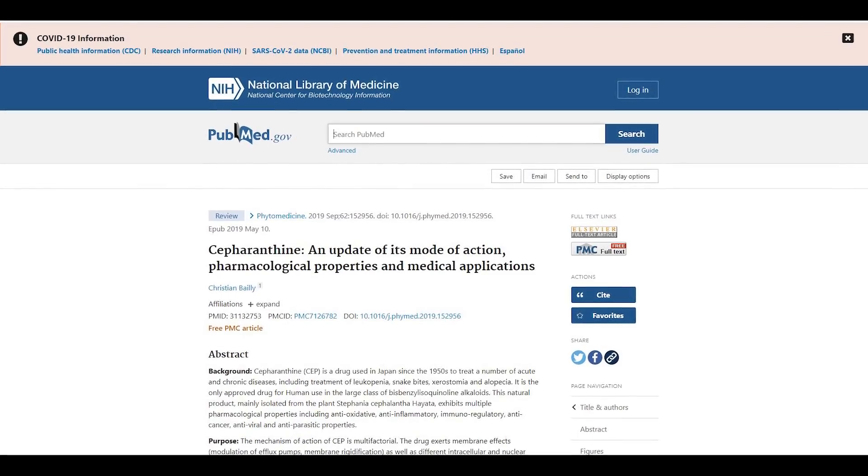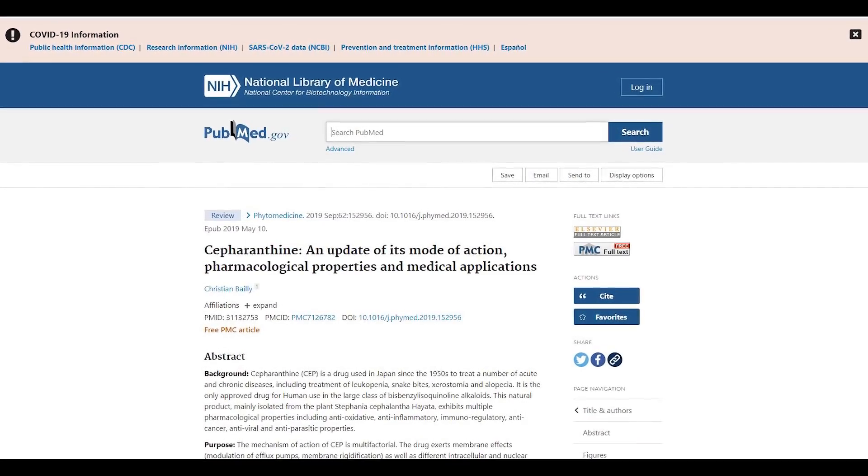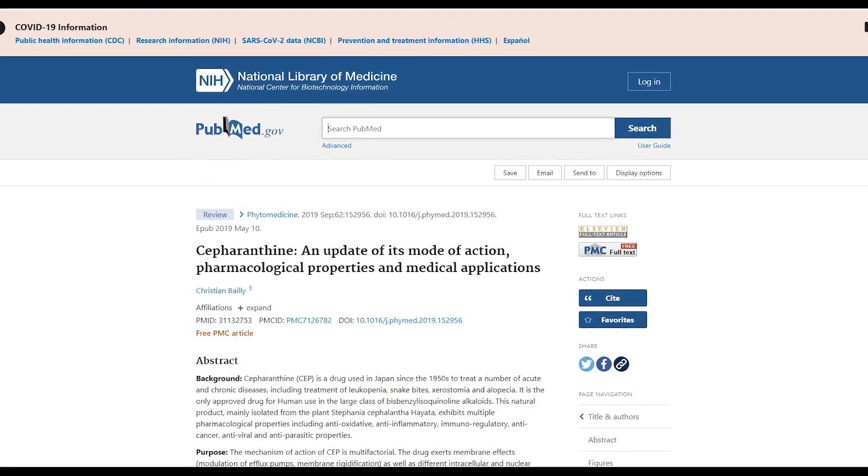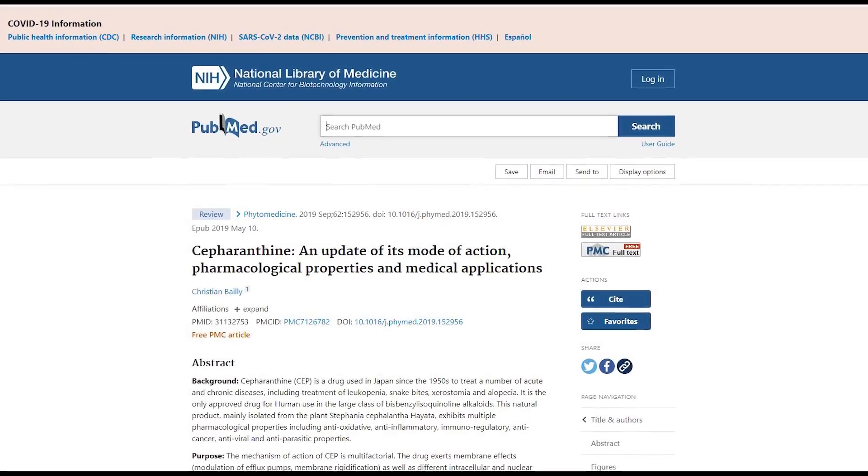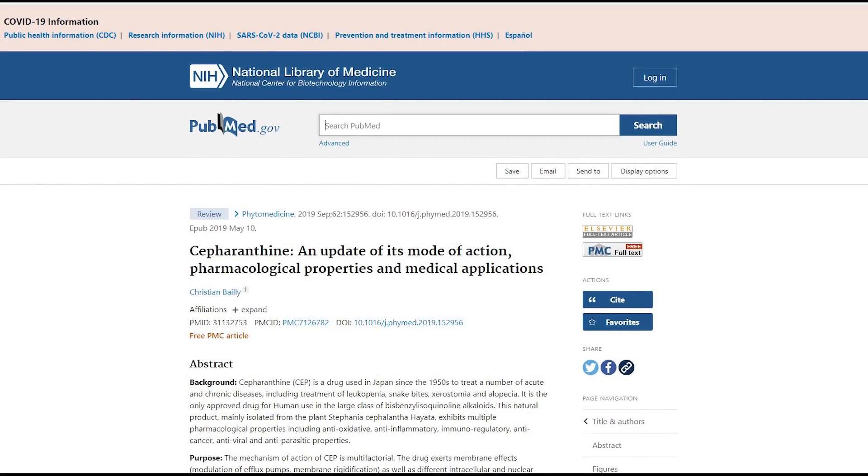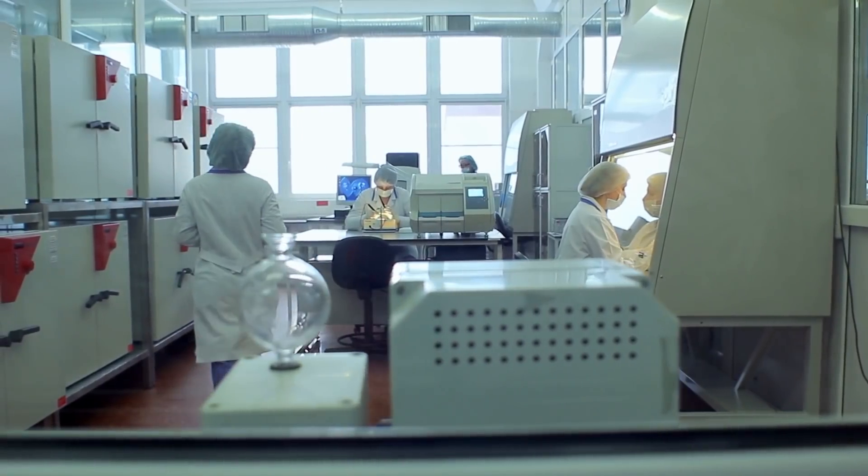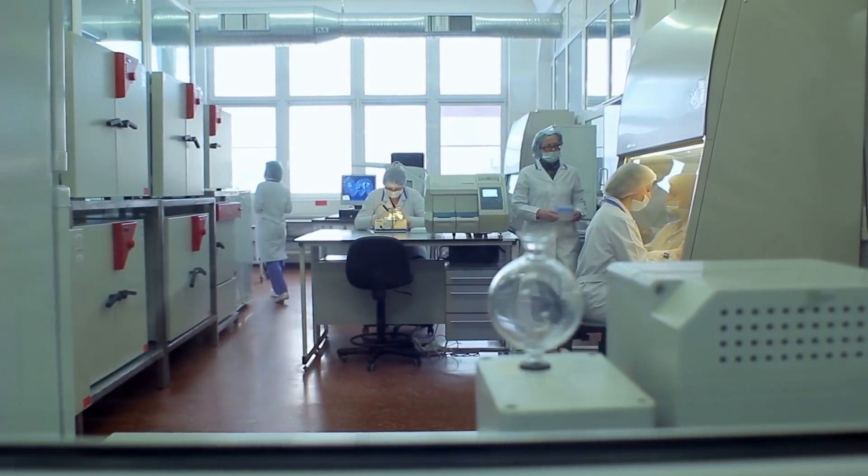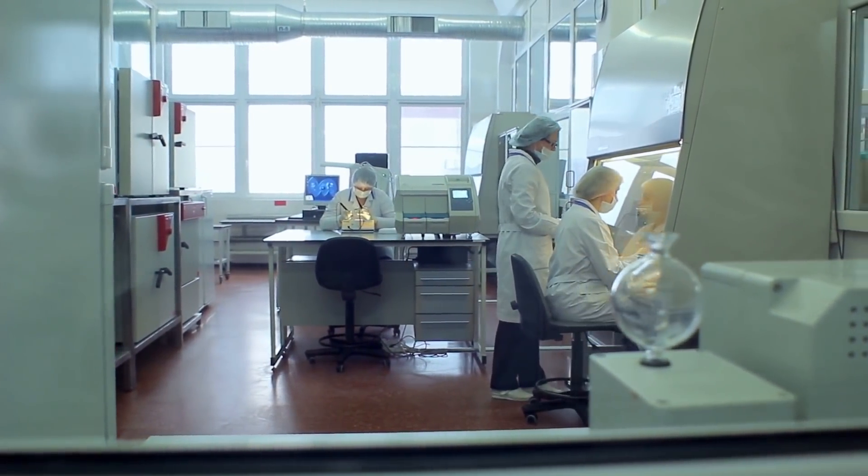According to the National Library of Medicine, sephoranthine is a drug used in Japan since the 1950s to treat multiple kinds of illnesses, such as snake bites, dry mouth, and alopecia. Laboratory tests showed that the substance contains anti-inflammatory, antiviral, antiparasitic, and anticancer properties, among others.